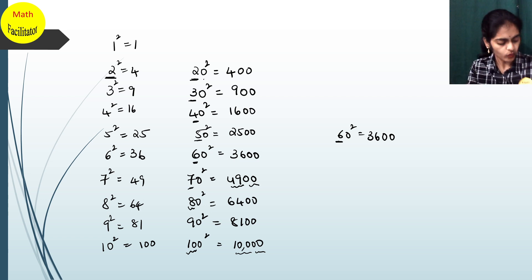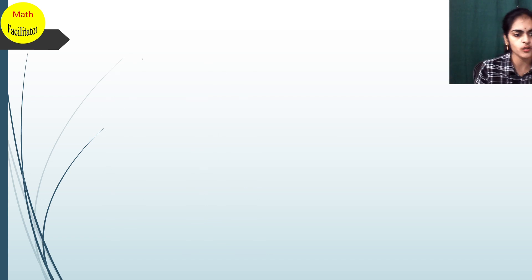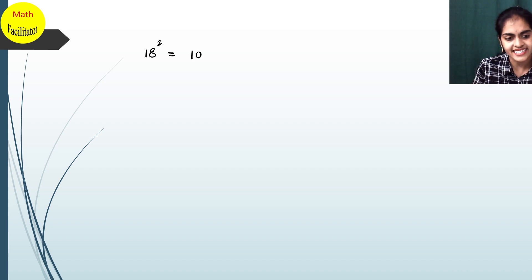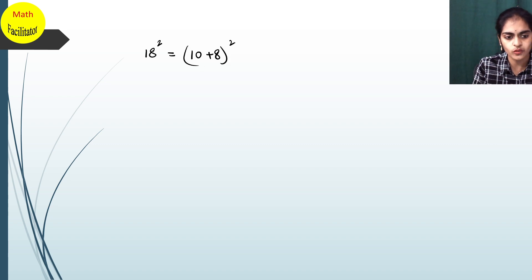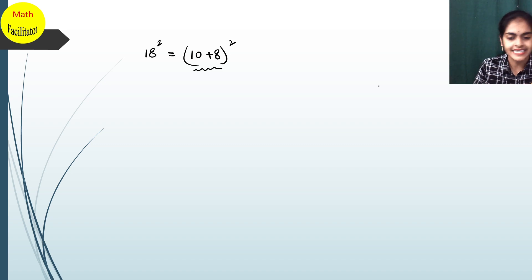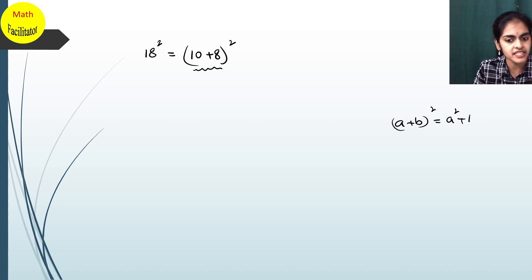Now, what if I ask you what is 18²? How shall we proceed? For 18², I can write 18 as (10 + 8) whole squared. Now you can see this as (a + b)² — it is nothing but a² + b² + 2ab. The same identity I am going to apply here, and see how easy it is going to be.